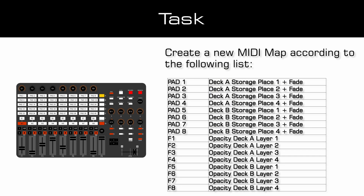As task we have to create a new MIDI map. Pad 1 to 4 should be assigned to the storage places 1 to 4 of deck A. Pad 5 to 8 should be assigned to the storage places 1 to 4 of deck B. The fader 1 to 4 should be assigned to the layer opacity of the first 4 layers at deck A, and faders 5 to 8 should be assigned to the layer opacity of deck B.